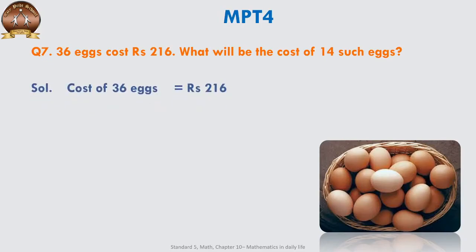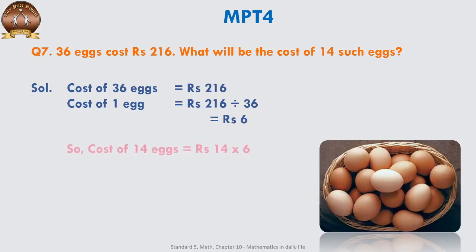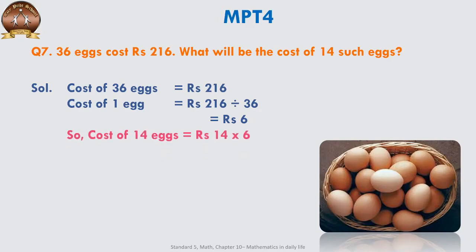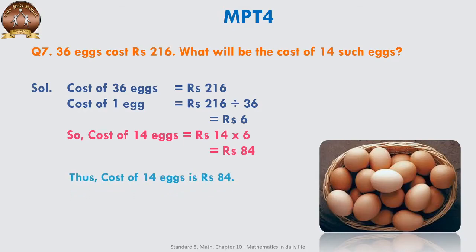36 eggs cost ₹216. What will be the cost of 14 such eggs? Cost of 36 eggs = ₹216. Cost of 1 egg = ₹216 ÷ 36 = ₹6. Cost of 14 eggs = 14 × 6 = ₹84. Thus, cost of 14 eggs is ₹84.